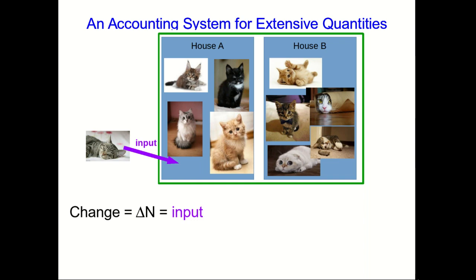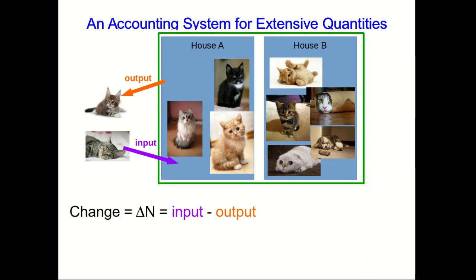So far, our change is just the number of cats that come in as input. However, cats can also leave the houses, go from the houses out into the environment, and so we would call this output.